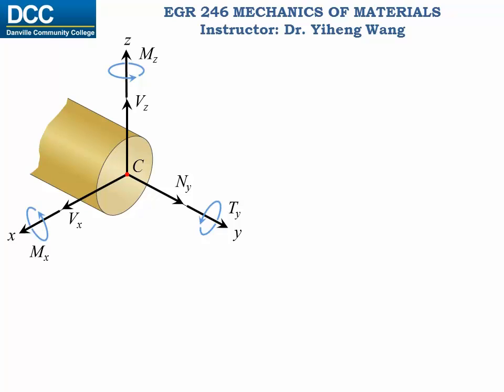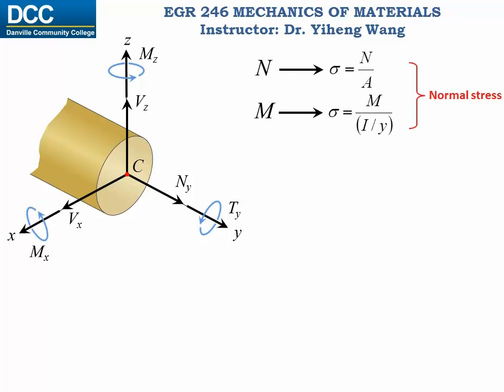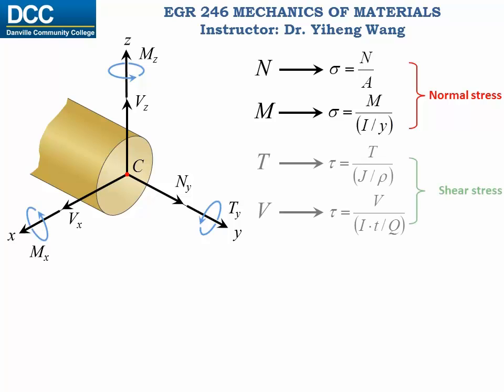For a member along its centroidal axis there are a maximum of six internal reaction components: one normal force, one torsional moment, two bending moments, and two shear forces. Normal force and bending moment will cause normal stress, and torsional moment and shear force will cause shear stress.